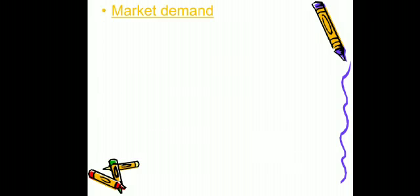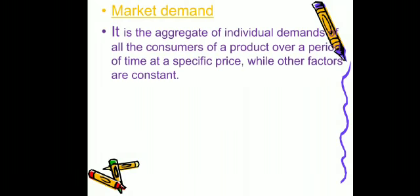Next is market demand. Market demand means the aggregate of all individual demands — it is the sum of demands of all consumers of a product over a particular period of time at a specific price, while other factors are kept constant. Market demand is calculated on the basis of the aggregate of individual demands of all the consumers.